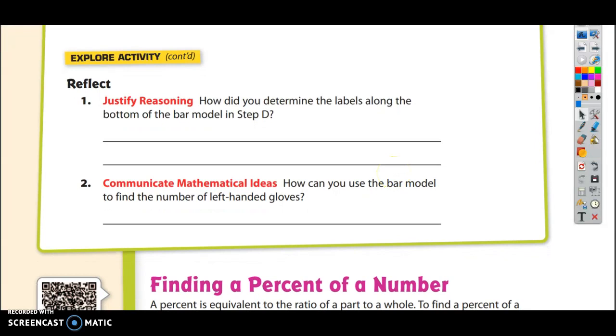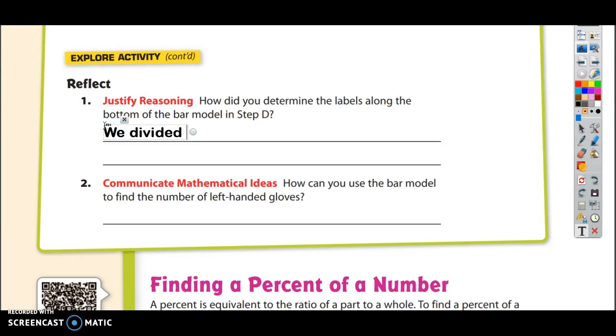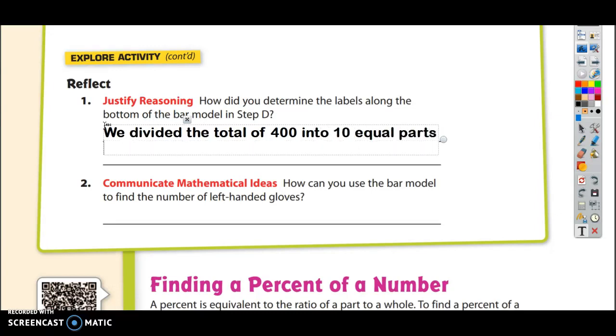So that's what I'm going to write for my answer for the reflect. How did you determine the labels along the bottom of the bar? In step D what we did was we divided the total of 400 into 10 equal parts. So each 10% is equal to 40 gloves.